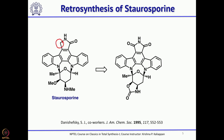He thought the carbonyl could be selectively reduced, and when reduced it may be possible to make both staurosporin as well as the other epimer. He also connected the oxygen and nitrogen by a carbonyl group to form a cyclic carbamate. This is a precursor in the total synthesis of Danishefsky.